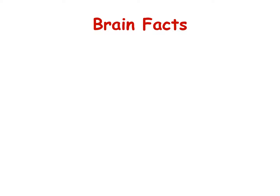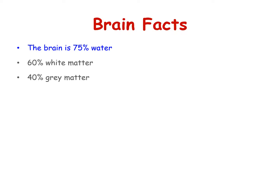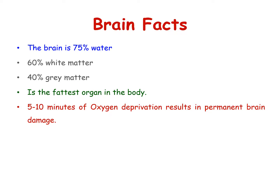Brain Facts Summary: The brain is located within the cranial vault, which is made up of the frontal, parietal, temporal, and the occipital bone. The brain consists of the cerebrum divided into the frontal, parietal, temporal, and occipital lobes. The brain is covered by the meninges and contains the cerebrospinal fluid. The brain is 75% water, 60% white matter, and 40% grey matter. It is the fattest organ in the body and is vulnerable to oxygen deprivation — 5 to 10 minutes of oxygen deprivation results in permanent damage.